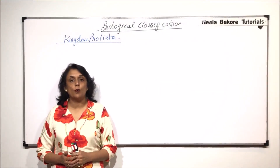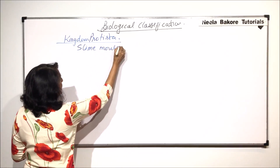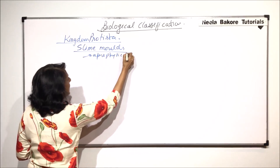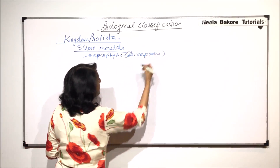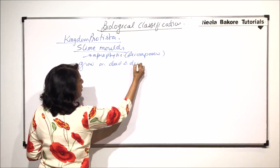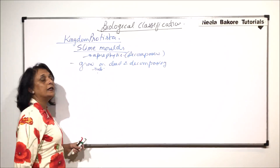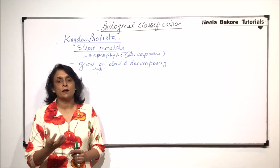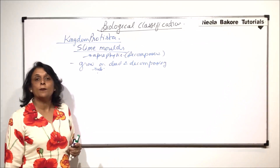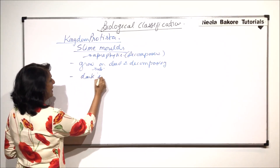In this part, we'll talk about the third group of Kingdom Protista, and that is the slime molds. Slime molds are saprophytic and they are considered decomposers because they grow on dead and decomposing matter. This dead decomposing matter could be a log of wood or leaves which have fallen. They obtain their nourishment from this dead and decomposing material and are normally found in dark and damp places.